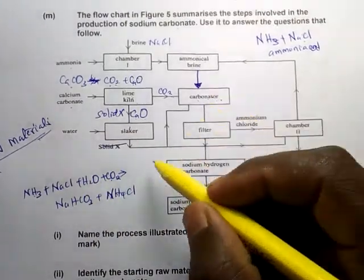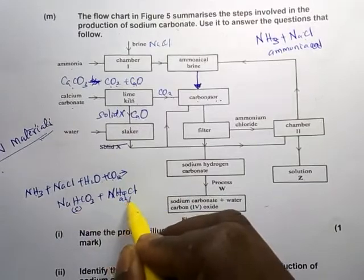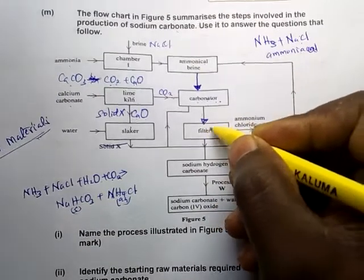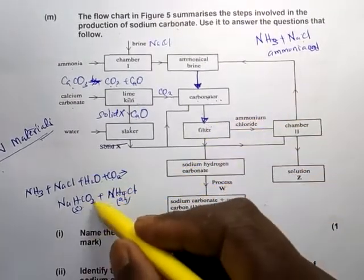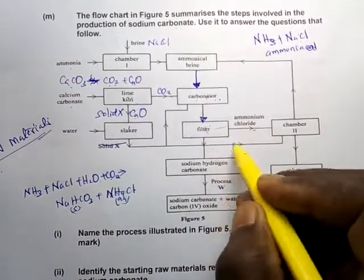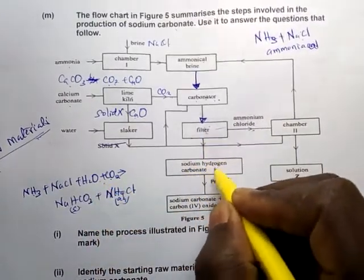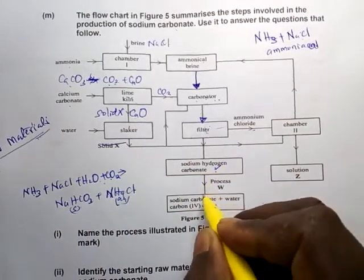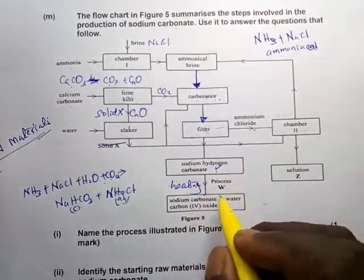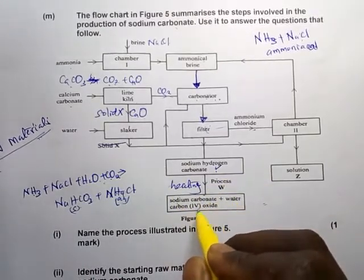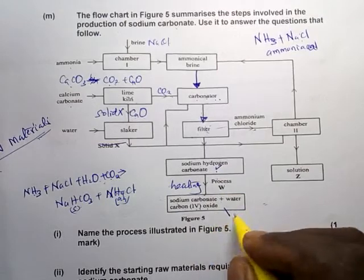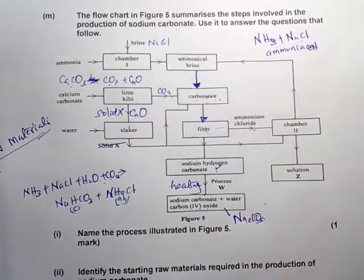Sodium hydrogen carbonate is a solid and ammonium chloride is aqueous. These come from the carbonator and filtration occurs. After filtration, ammonium chloride goes one way and sodium hydrogen carbonate comes down. Sodium hydrogen carbonate then undergoes heating — process W is burning or heating — to form sodium carbonate plus water plus carbon dioxide. That gives us the final product: sodium carbonate.